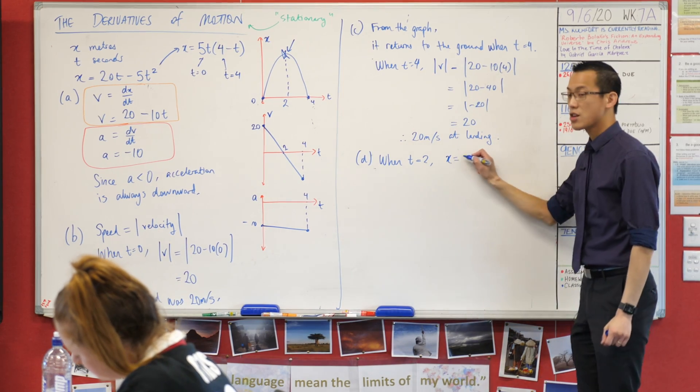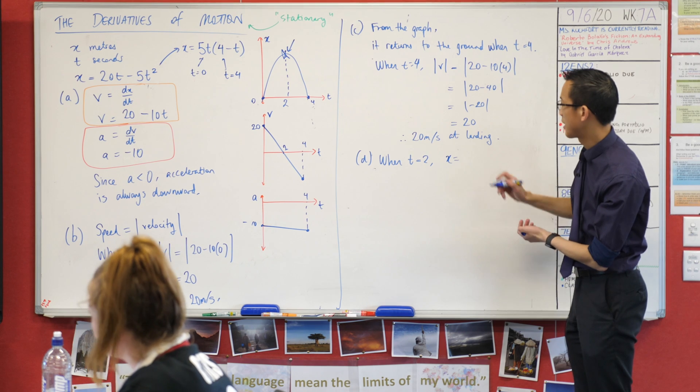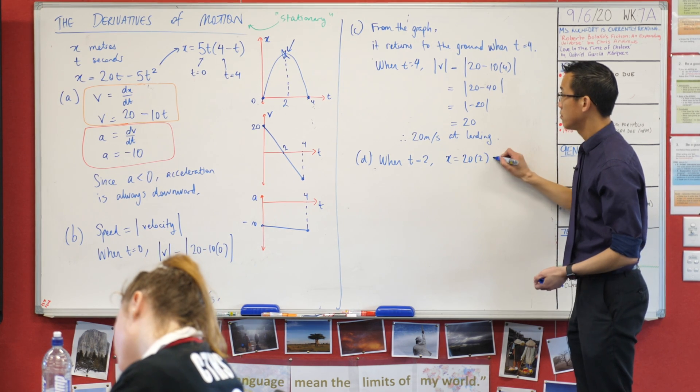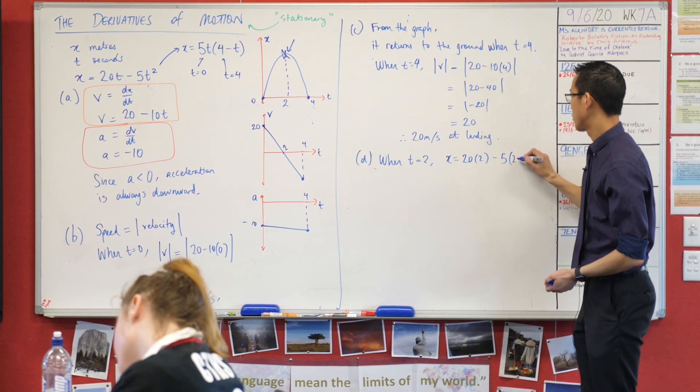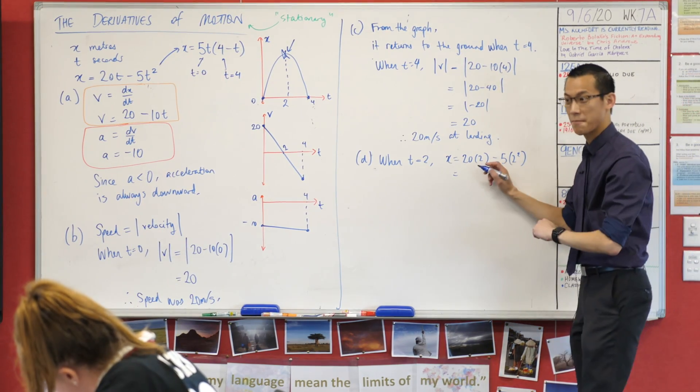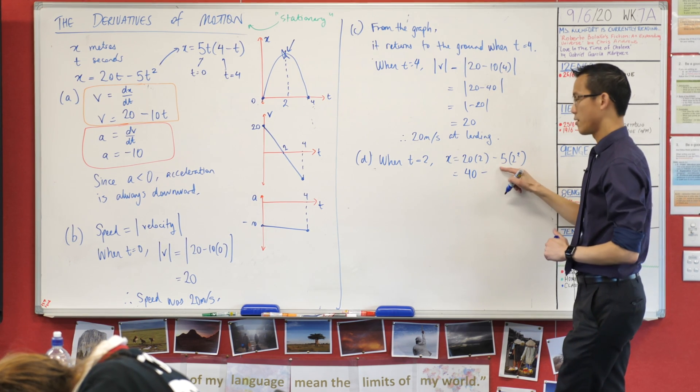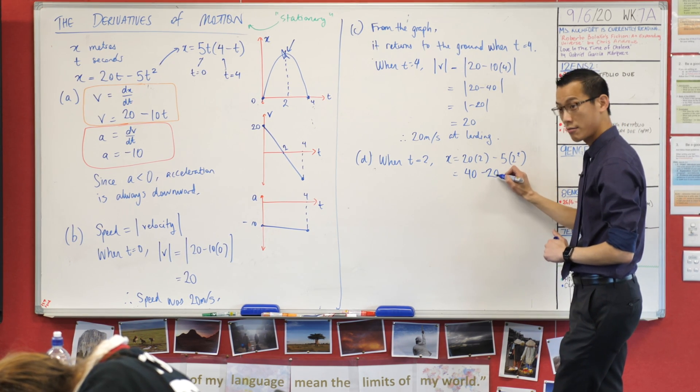So I'm going to say when t equals two, x equals, and let's do the substitution. 20 lots of two, take away five lots of two squared. Anyone help me out? What's the next line going to be? 40, take away five lots of four, which is 20.